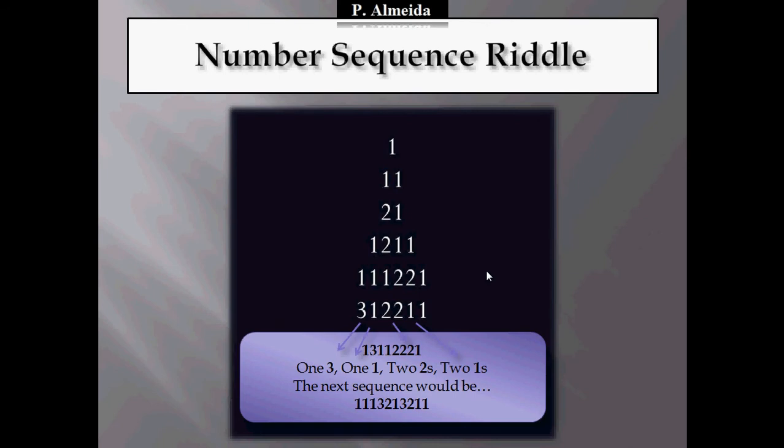And if you want to look at it, the next sequence would be, for example, 1, 3. So no, 1, 1. So 1, 1. And then 1, 3, 1, 3. And then 2 1s, so 2 1. And then I would have 1, 2, 3 2s, 3 2s. And then I would have 1, 1, 1, 1. There you go.